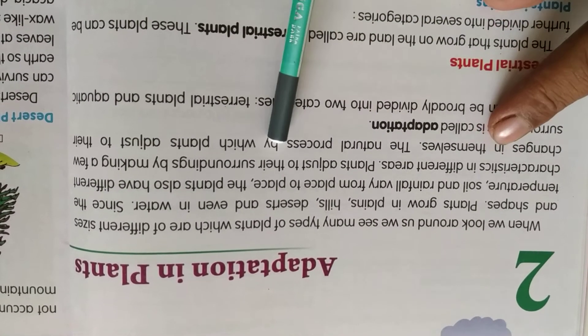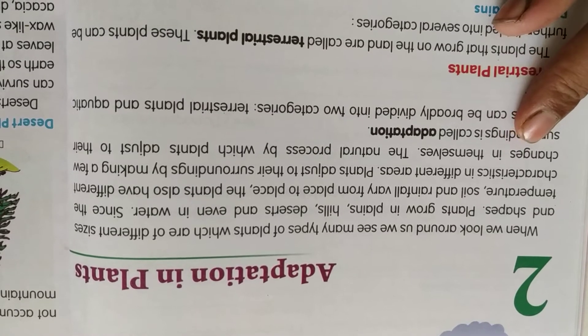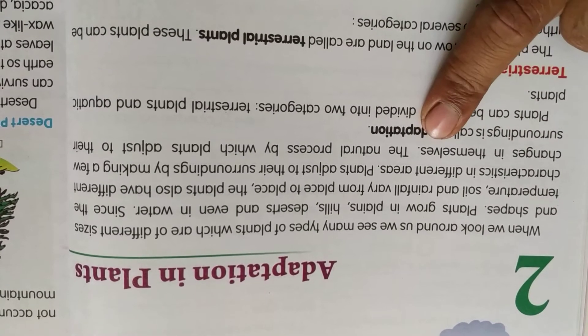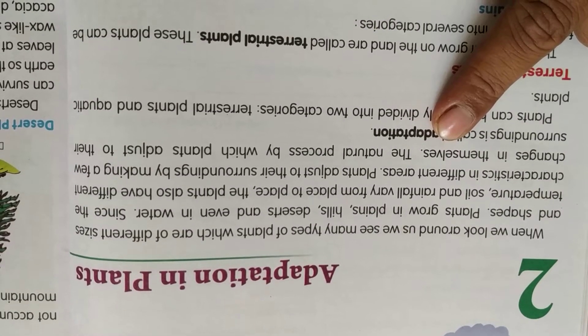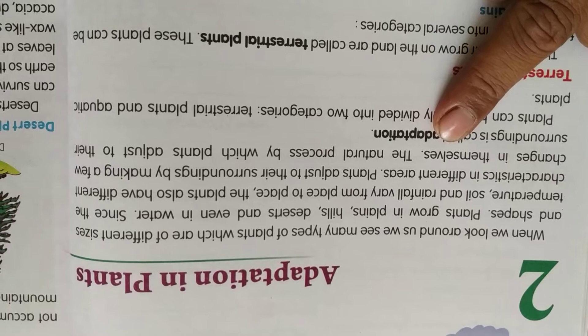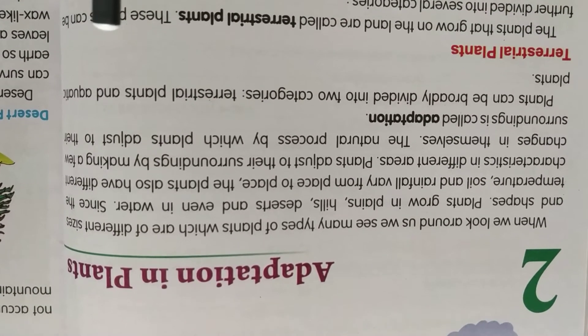Plants adjust to their surroundings by making a few changes in themselves. The natural process by which plants adjust to their surroundings is called adaptation. Adaptation means when a plant adjusts to its surrounding, that process is called adaptation.